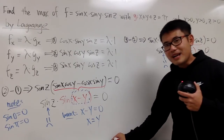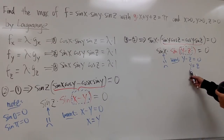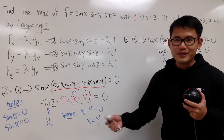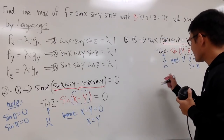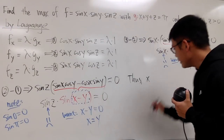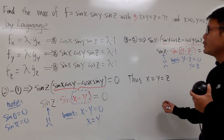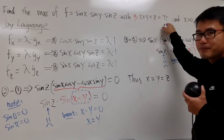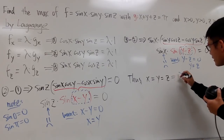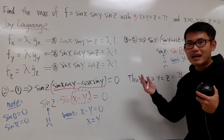We have all the conditions we need: x equals y, and y equals z, so x equals y equals z. If all three are equal and they must add up to pi, each one is just pi over 3. So x, y, z all equal pi over 3.